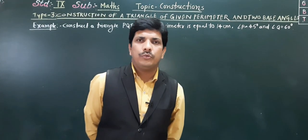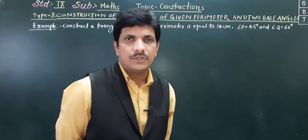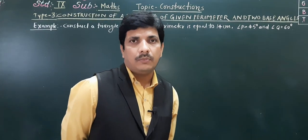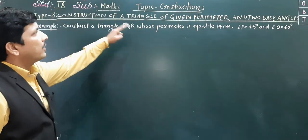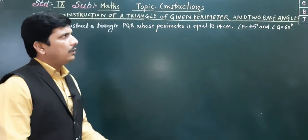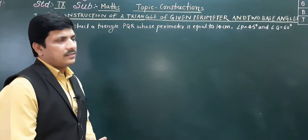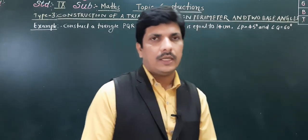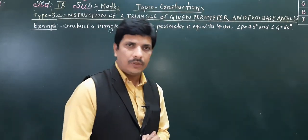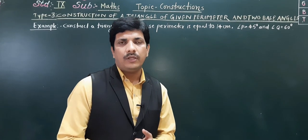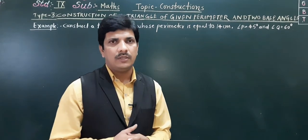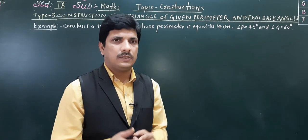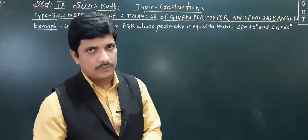Hello everybody, today we are going to see type three, that is construction of a triangle. In this type, we are given the perimeter of the triangle and two base angles. When both these are given, we will see how to construct the triangle. Before this, we have seen when one base angle is given, the length of the base is given, and the sum of the other two sides is given.